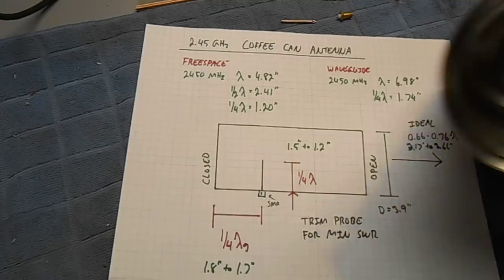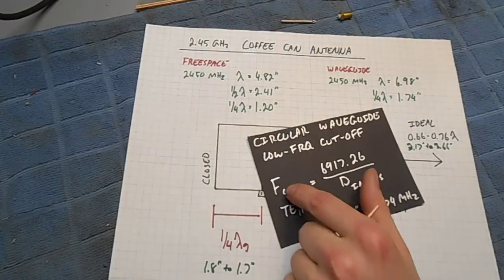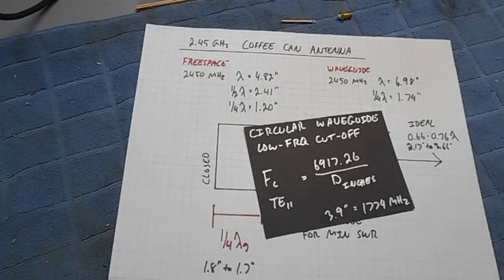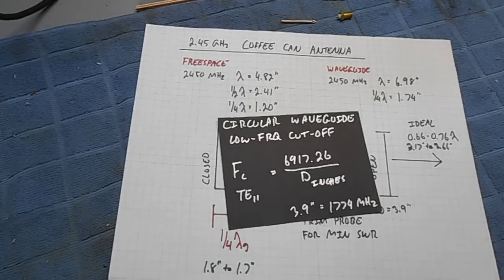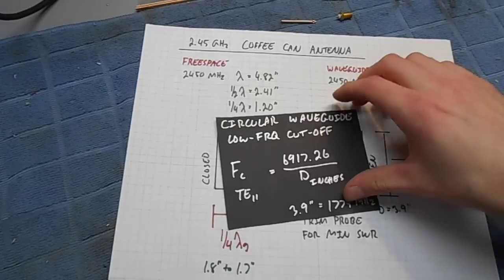Circular waveguides, which is what the coffee can is, have a low-frequency cutoff. It's actually called modes. It's a mode of the propagation of the signals inside the waveguide itself. The low-frequency cutoff is based on this equation. For a 3.9-inch diameter waveguide, the low-frequency cutoff is 1,774 megahertz.